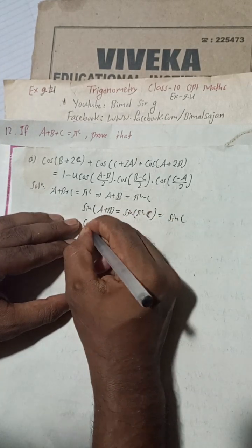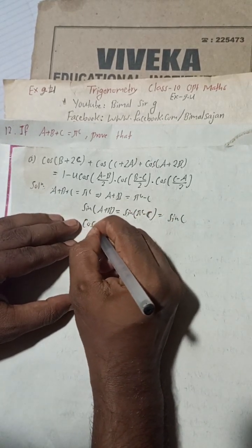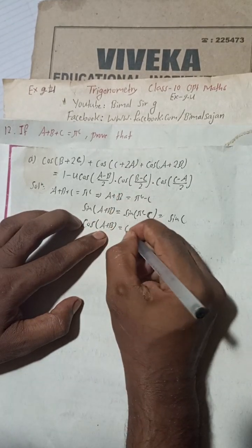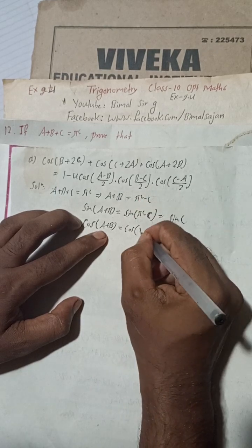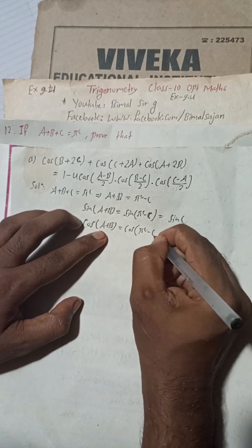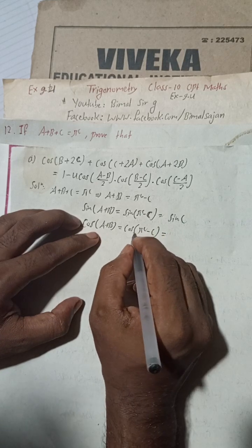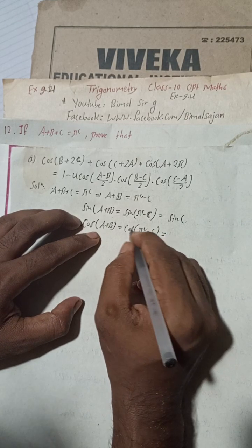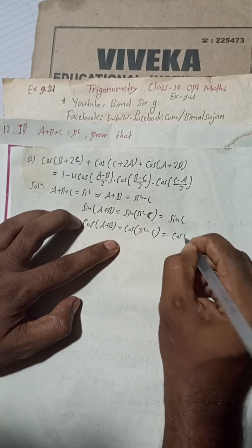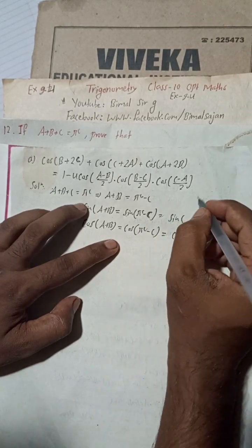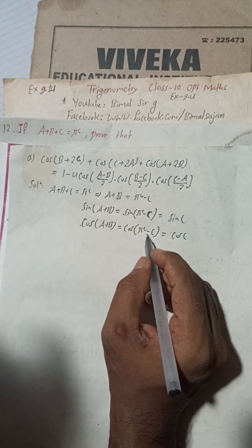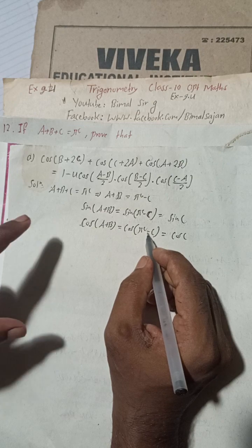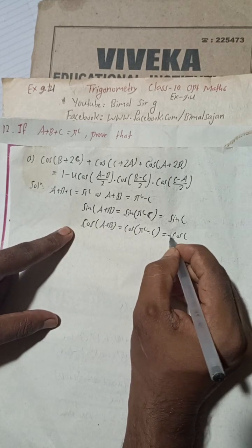Taking cosine on both sides: cos(a + b) = cos(π − c). Using the CAST rule, in the second quadrant cosine is negative, so cos(a + b) = −cos c. Similarly we can derive cos(b + c) = −cos a and cos(c + a) = −cos b.